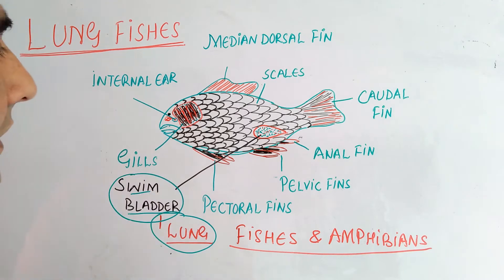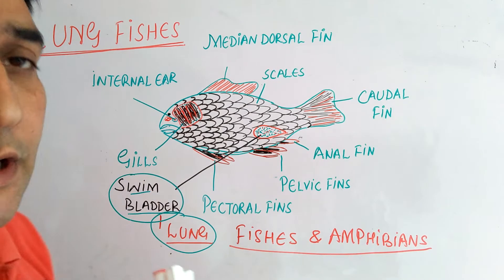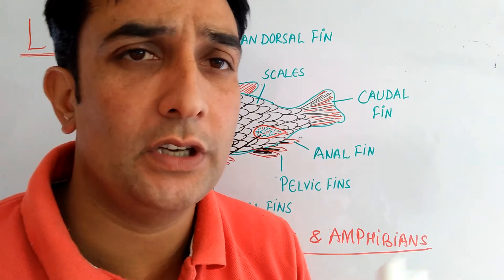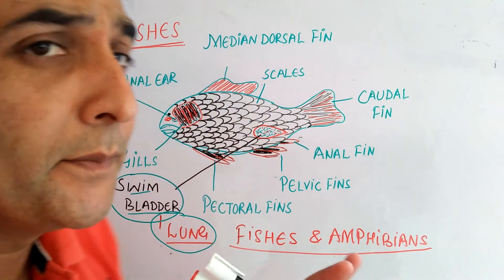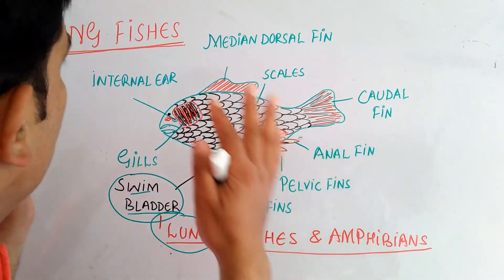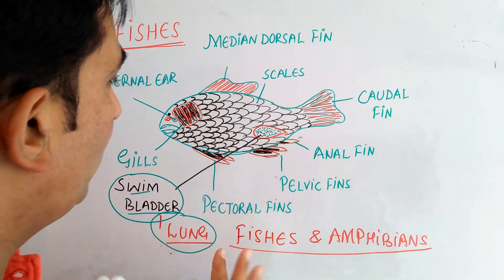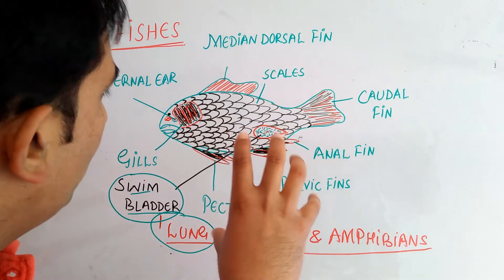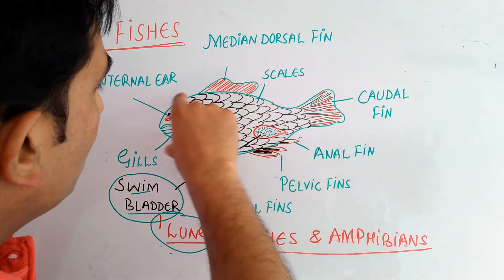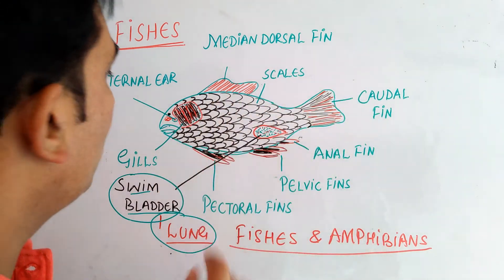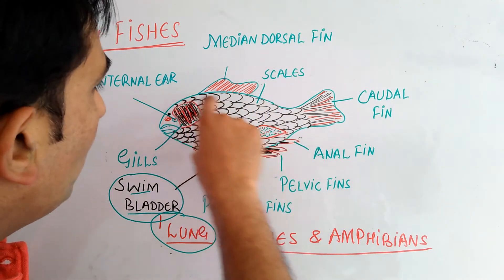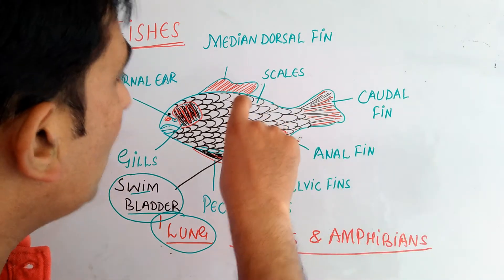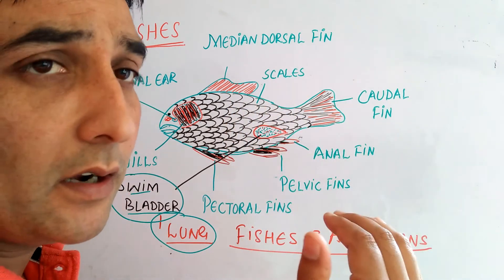Lungfishes are associated with the class Osteichthyes — the bony fishes. These lungfishes show a general resemblance with other bony fishes; they resemble bony fishes in appearance. First we will understand the general features of the bony fishes, and after that we will see how the lungfishes differ from them.